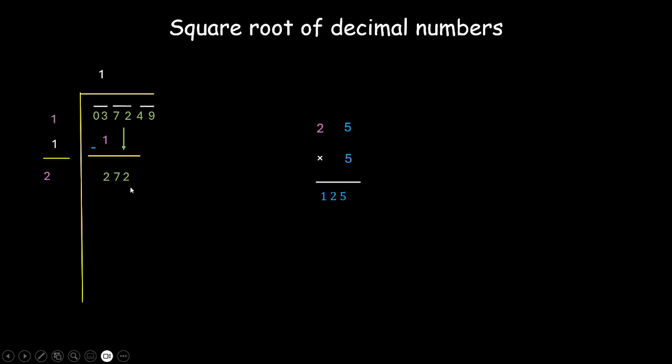You can go with 6, 7, 8 and so on. But if this number is greater than the number that you have here, then you need to go for smaller numbers. You can try with 4, 3, 2 and so on. So now clearly we need a slightly bigger number. So let's just try with 8. 28 into 8, this is 224.